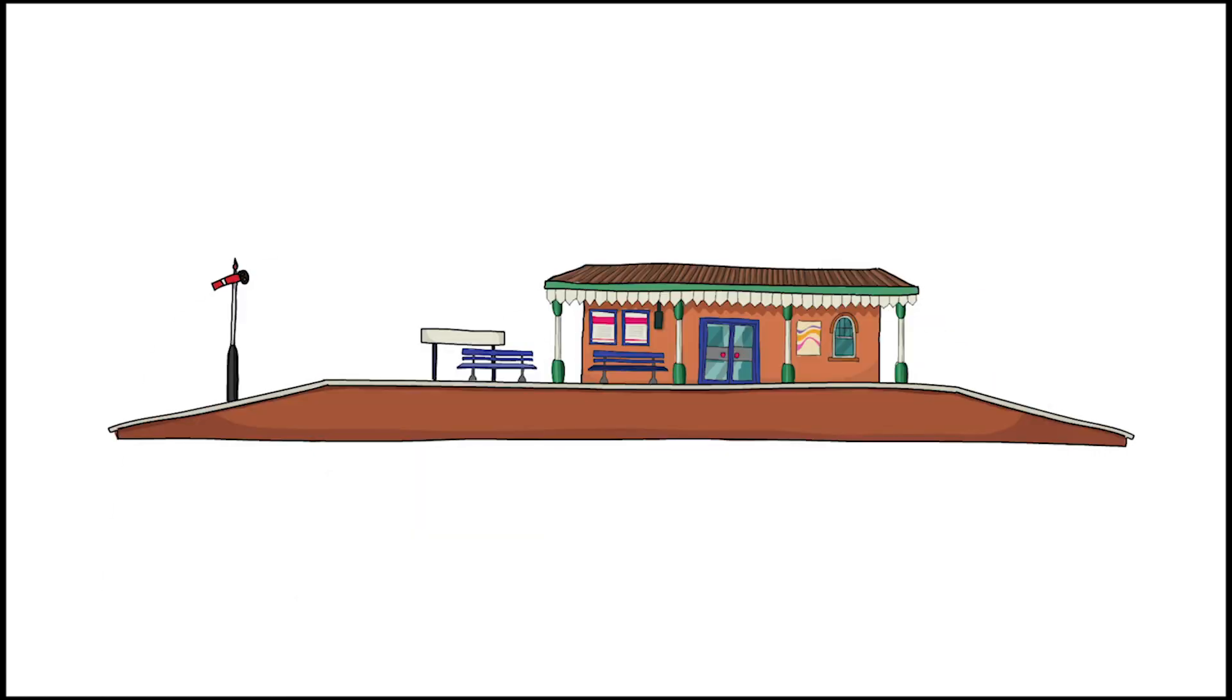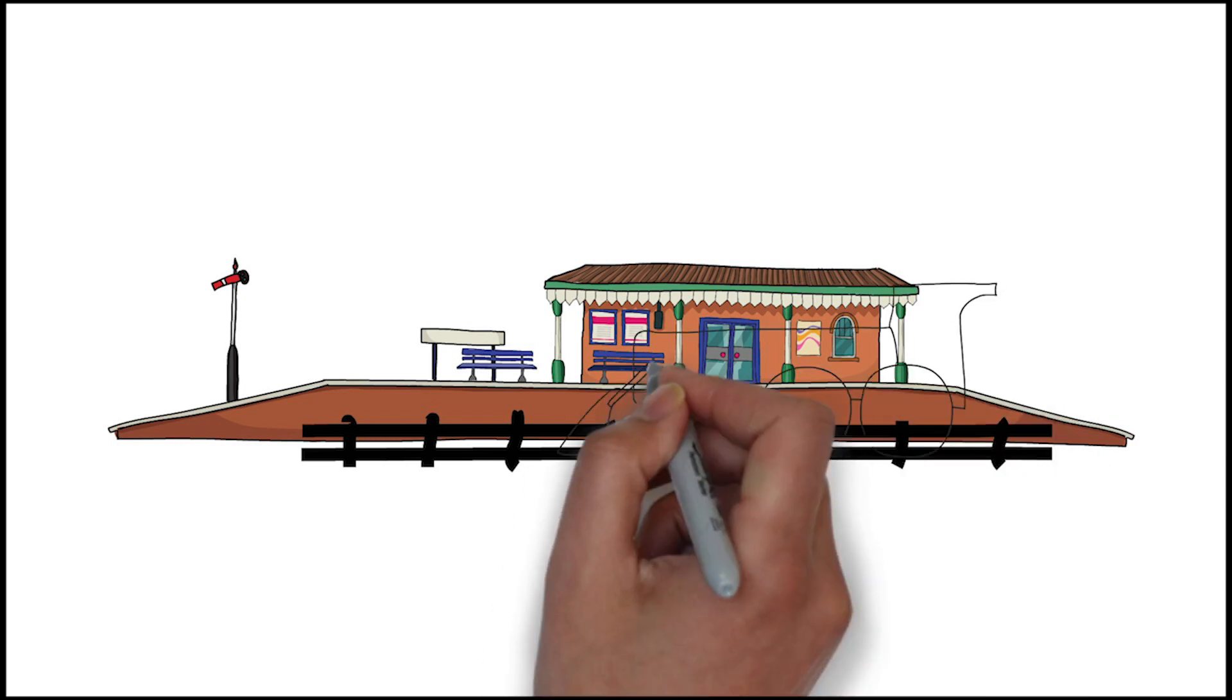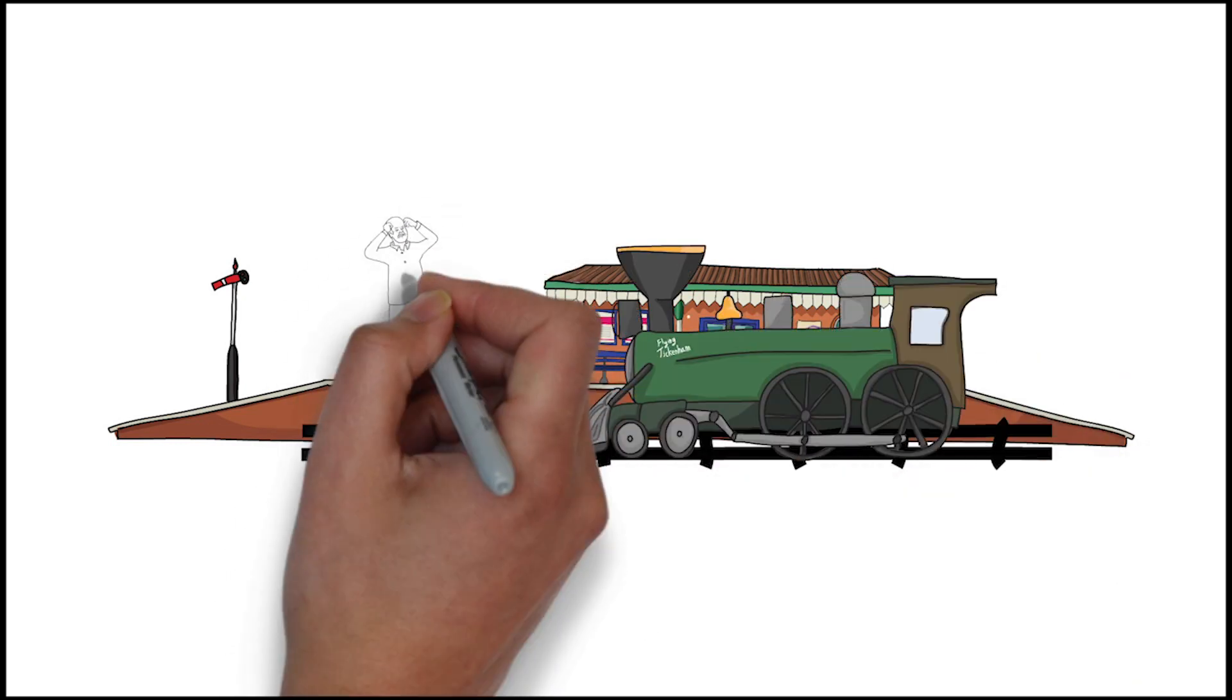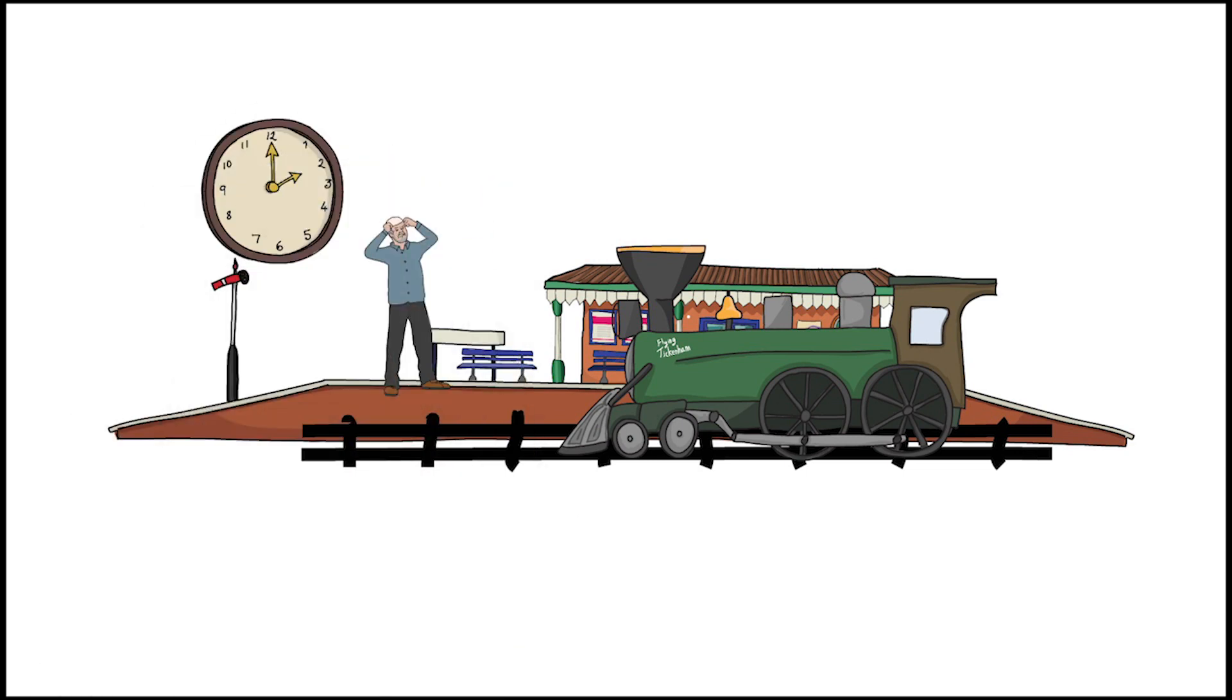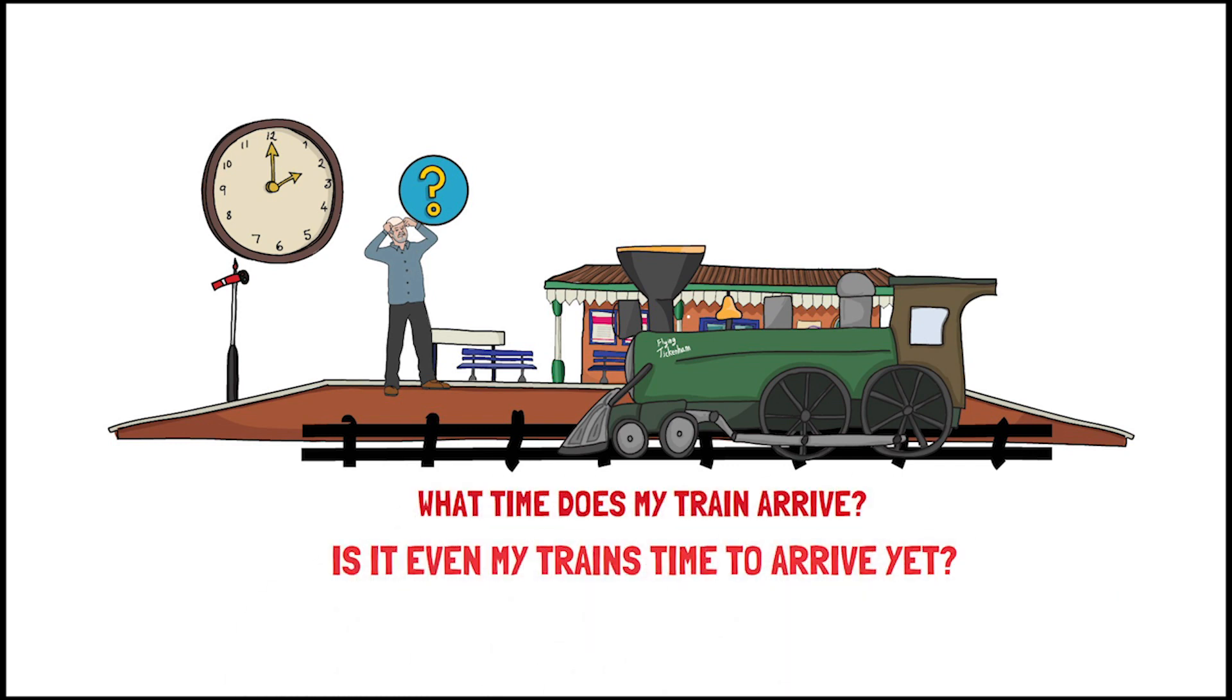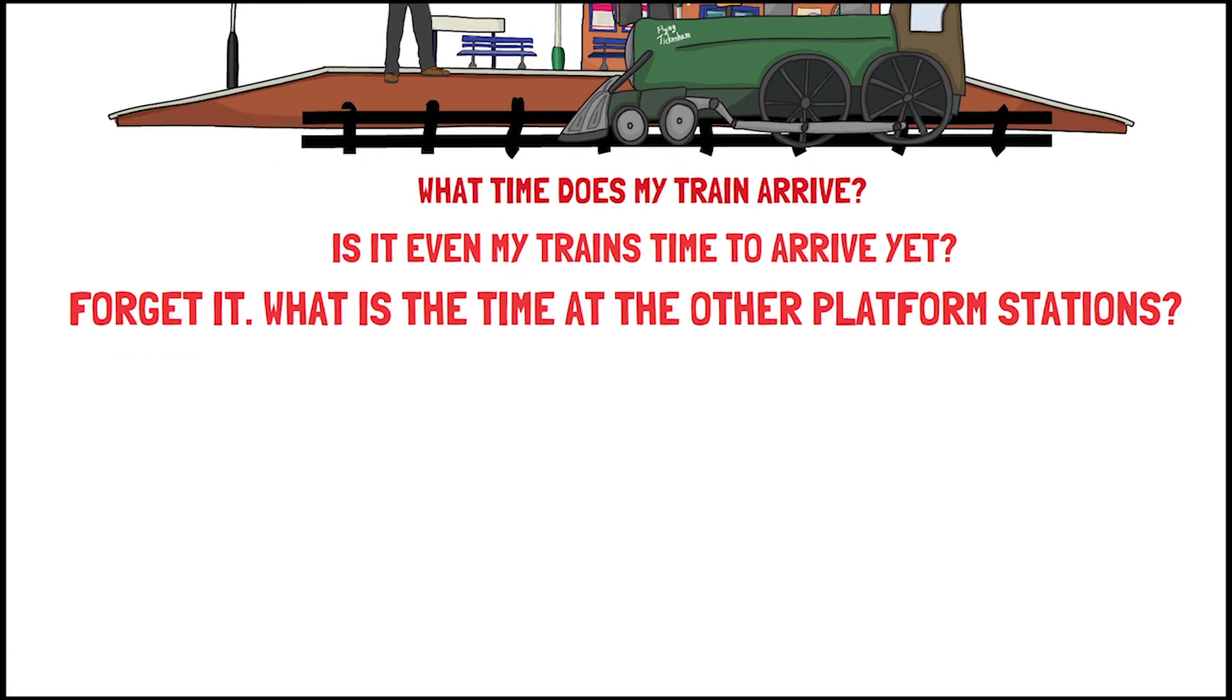Time calculation became a serious problem for people traveling by train. Every city in the United States used a different time standard, so there were more than 300 local sun times to choose from. Railroad managers tried to address the problem by establishing 100 railroad time zones.